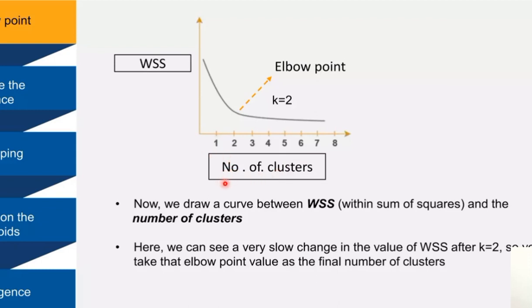Here in the graph in the x-axis we have plotted the number of clusters. And this is within sum of squares. We can see a very slow change in the value of WSS after k equal to 2, which means that this is the optimal value for the cluster.